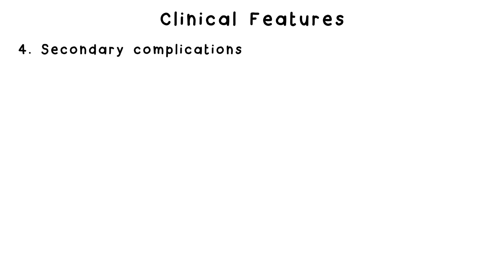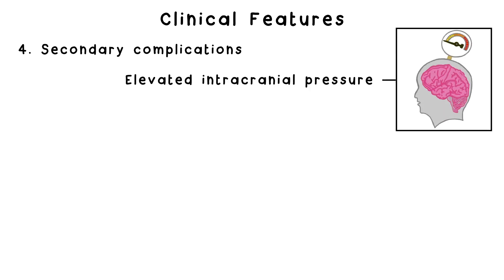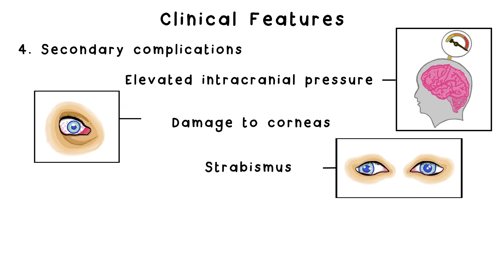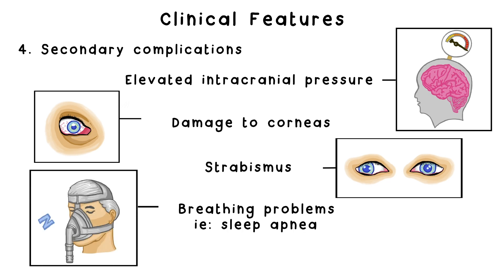Some secondary complications can arise from the abnormal skull and face shape. Examples include some degree of intellectual impairment arising from elevated intracranial pressure, damage to the corneas from proptosis, strabismus where the eyes don't point exactly in the same direction, and breathing problems like sleep apnea from narrowing of the airways between the nose and the throat.